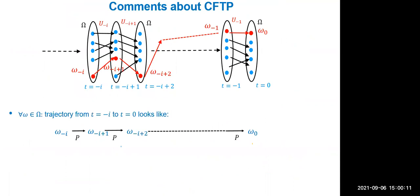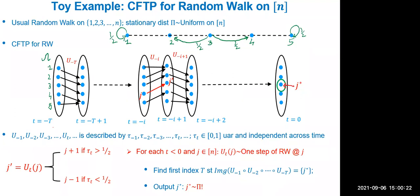So that's the CFTP algorithm. Now the intuition for correctness. The key observation is that all states use the same tau, so they all go in the same direction — everyone either goes up or goes down. The update function at time t maps every state j to j+1 if tau > 1/2, and to j-1 if tau < 1/2, with boundary handling at the edges.